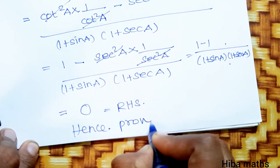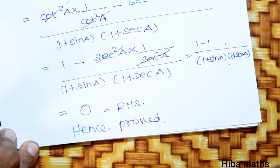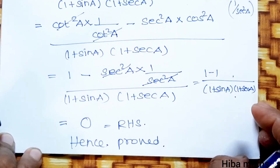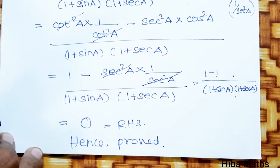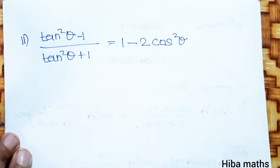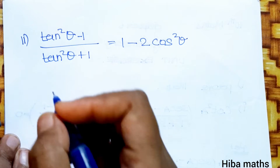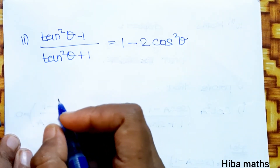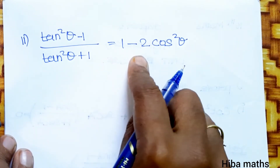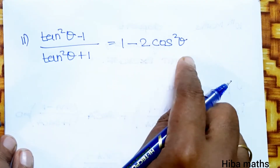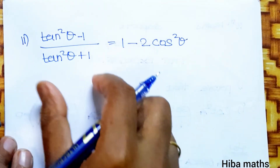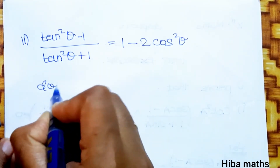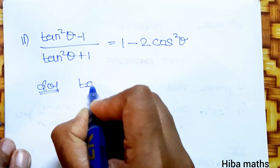Everyone should understand — we used three key formulas here. Now for the second subdivision: prove that (tan squared theta minus 1) divided by (tan squared theta plus 1) is equal to (1 minus 2 cos squared theta). Here LHS is given and we need to prove it equals RHS.